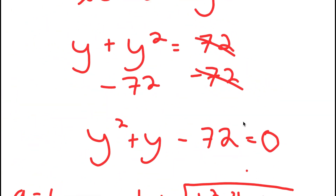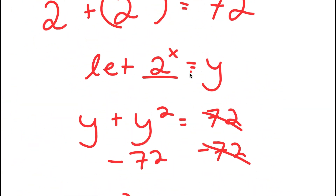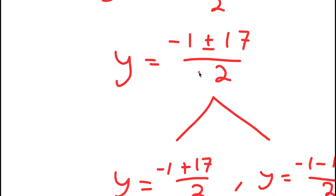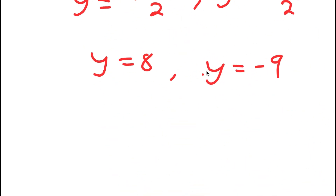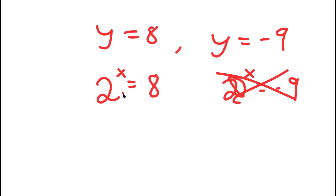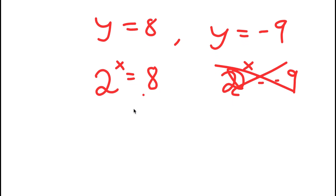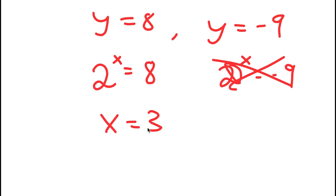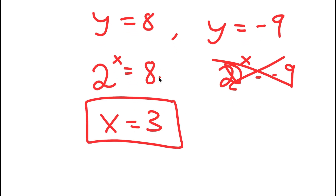Going back — remember how we let 2 to the power of x equal to y — this gives me two equations: 2 to the power of x is equal to 8, and 2 to the power of x is equal to negative 9. We can automatically cancel the second equation out because a positive number raised to any power cannot equal a negative number. So 2 to the power of x equals 8 is my only remaining solution, and this means x equals 3 because 2 to the power of 3 equals 8.